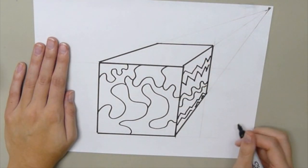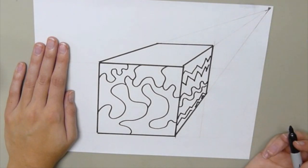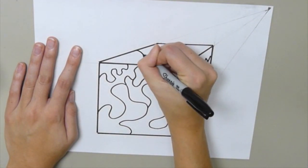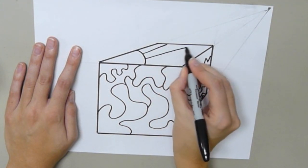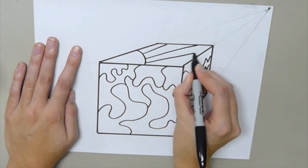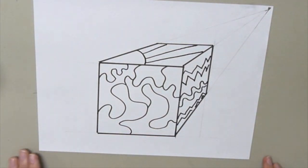And then on the top, you can do anything because it's all about how you color. So I'm going to make a sun with some rays. The first part of your cube one-point perspective project is now done. See you then.